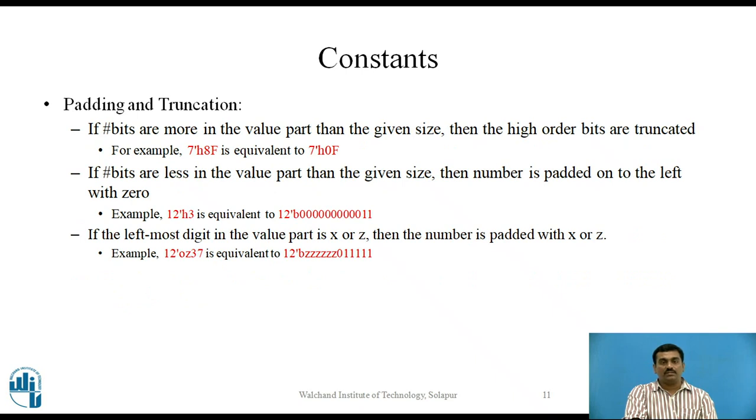Now let us see padding and truncation that is used by Verilog for storing the integer constants. If number of bits are more in the value part than the given size, then the higher order bits are truncated. For example, 7'h8f is equivalent to 7'h0f. The reason here is that the given number is hexadecimal and its value part given is 8f, which requires total number of 8 bits in binary representation. However, the size specified here is 7 due to which higher order bit is truncated. Thus, its value becomes 0f.